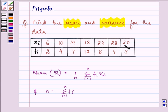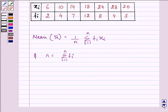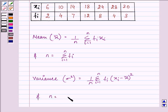We need to find out the variance also and its formula will be equal to 1 upon n summation fi into xi minus x bar the whole square where i equals 1 to n. And n again is equal to summation fi, i equals 1 to n.